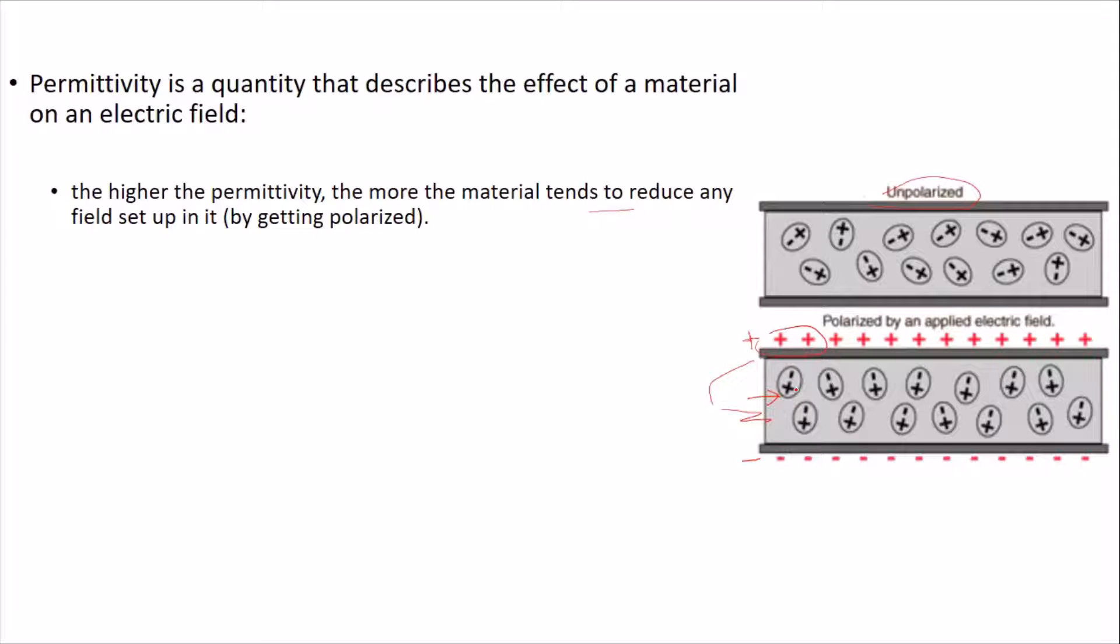You can see here, if we draw this external field, the external field is in this direction from positive to negative. And this internal field has the opposite direction. Plus is downwards, minus is upwards, so this is in the opposite direction. Two fields are acting in the opposite direction. So with the external field, we have a field like this, and the internal field is like this. It means that this internal field is reducing the effect of the external field.